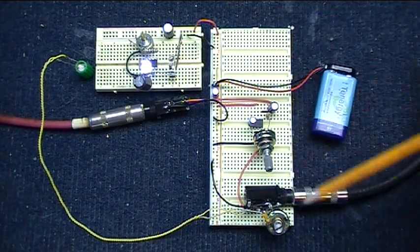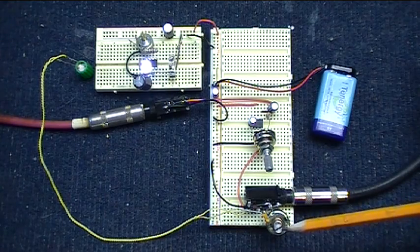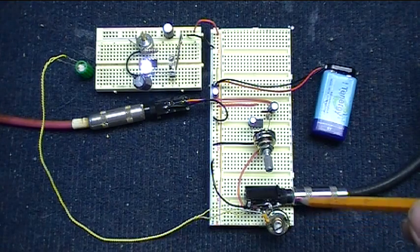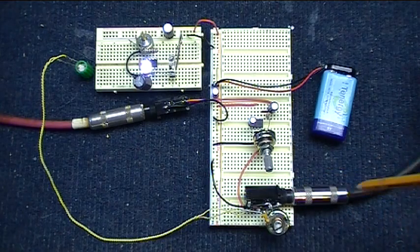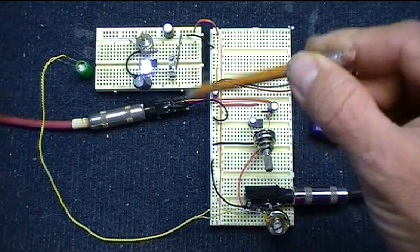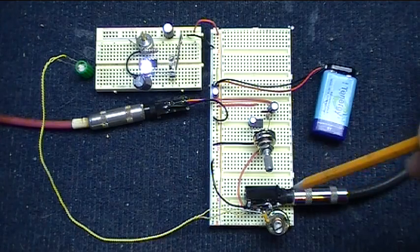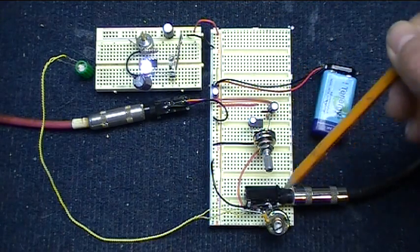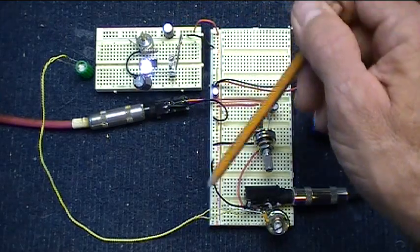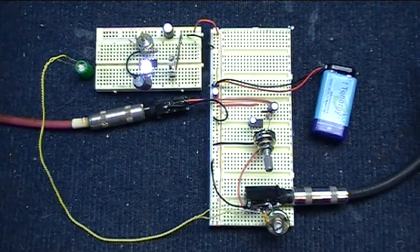Oh, one more thing too, by the way: this potentiometer here goes from what's called wet to dry on the signal. Dry being just the signal coming through with no effects, wet being the signal 100% running through the effects unit and then making its way to the amp. So let me turn up the amp.